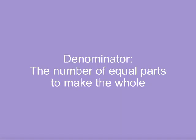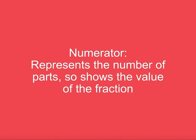In a fraction, the number of equal parts that make the whole is the bottom number of the fraction. This is called the denominator. The top number represents the number of parts and shows the value of the fraction. This is called the numerator.